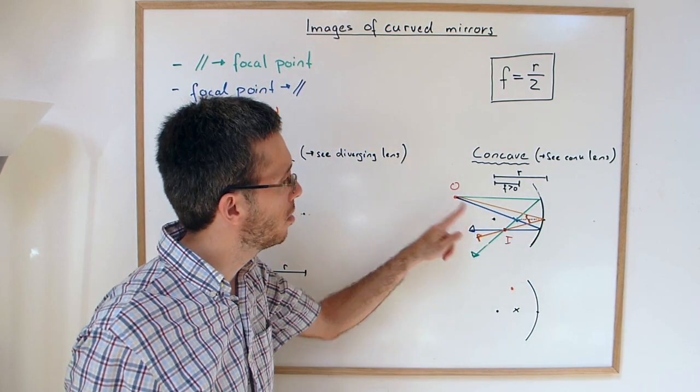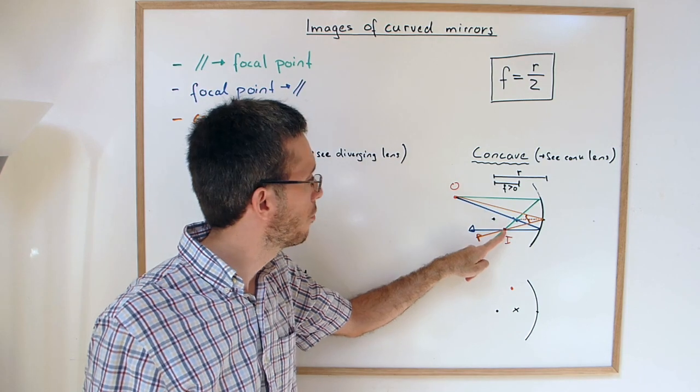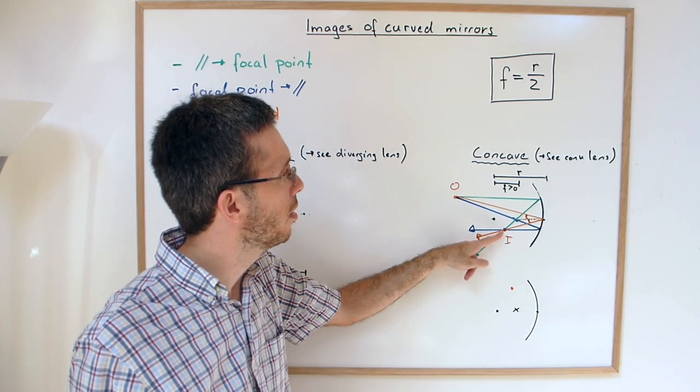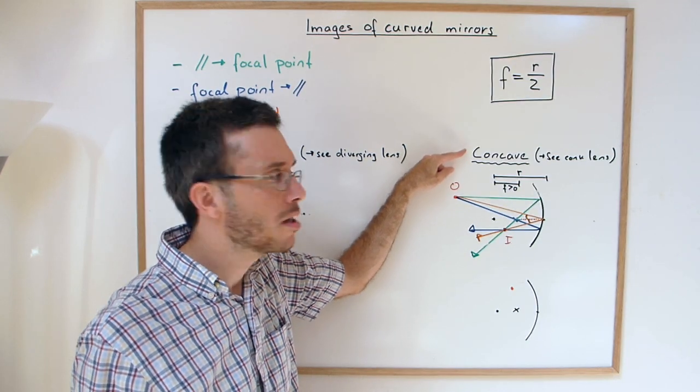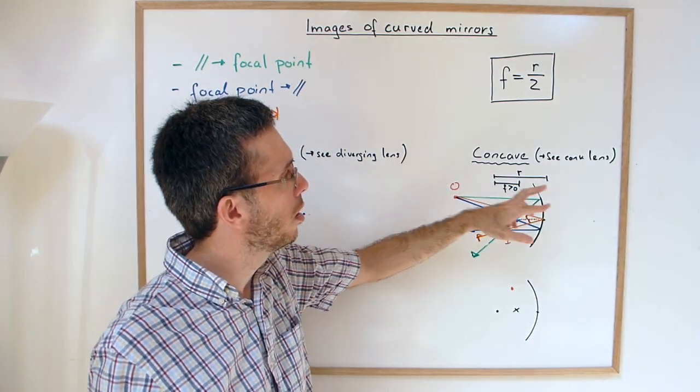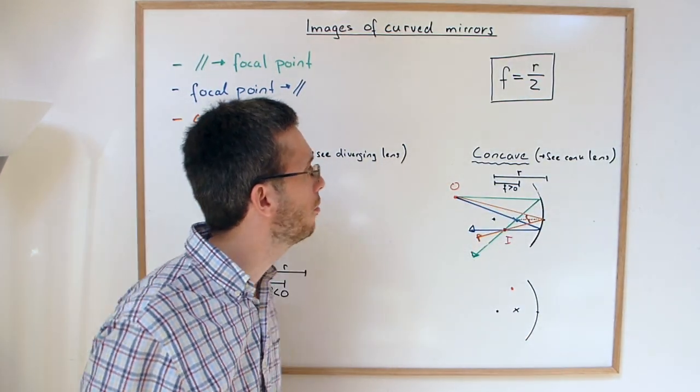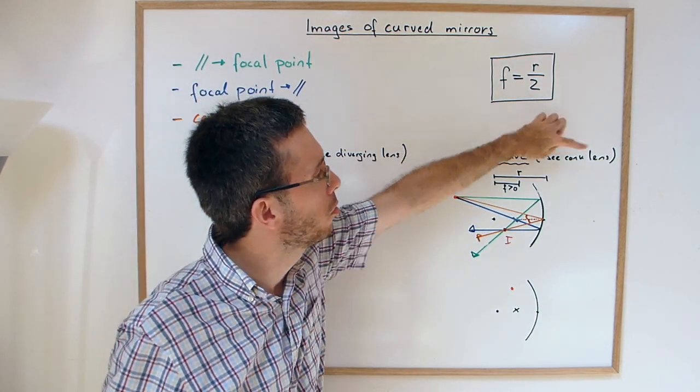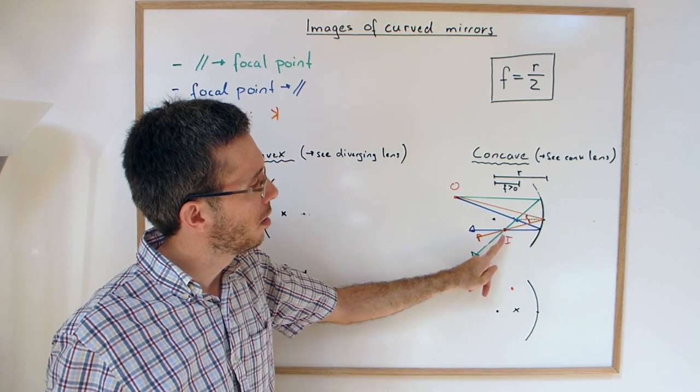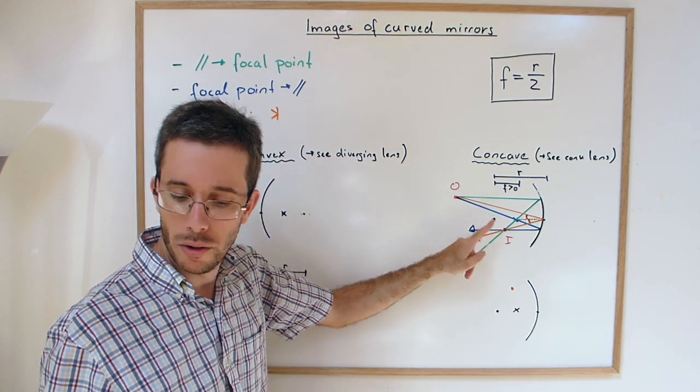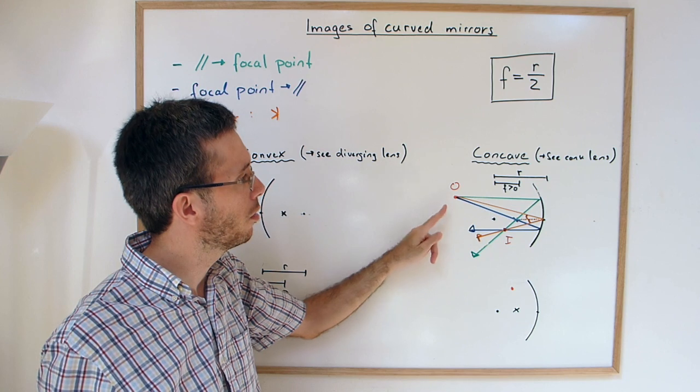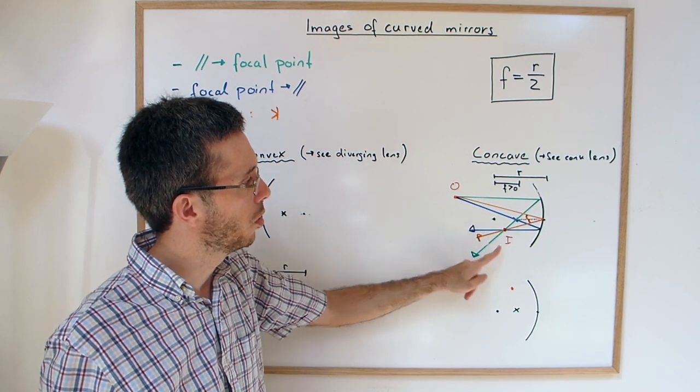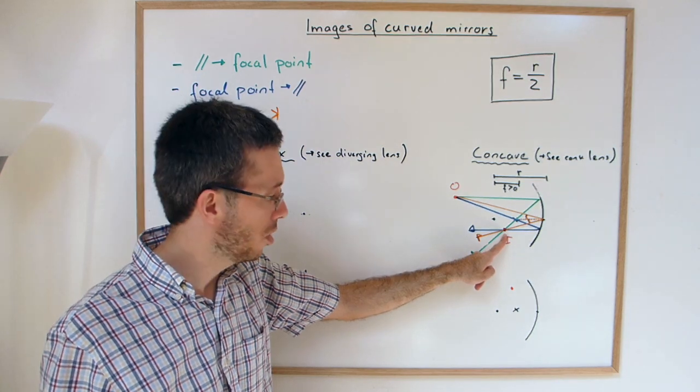So in this case, the image is a real image in front of the mirror. The rays are really meeting here. The concave mirror actually is very similar to a convex lens or a converging lens, in the fact that it can produce a real image or a virtual image. As with the converging lens, if the object is left of the focal point, we get a real image.